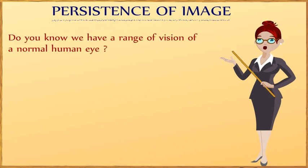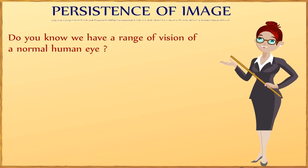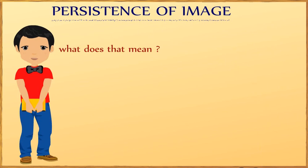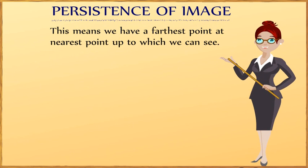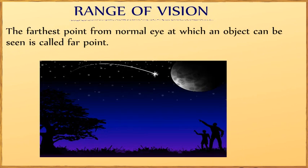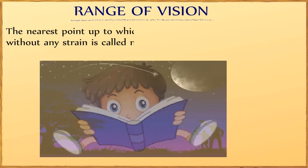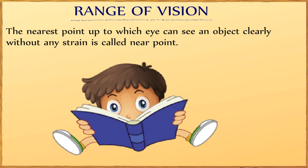Do you know we have a range of vision for the normal human eye? This means we have a farthest point and a nearest point up to which we can see. The farthest point from normal eyes at which an object can be seen is called the far point. The nearest point up to which eyes can see an object clearly without any strain is called the near point.